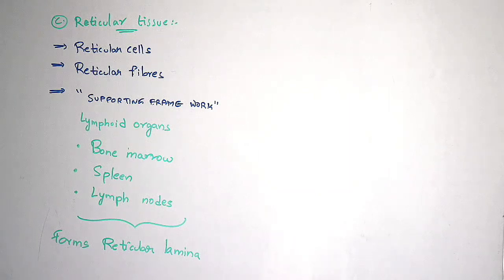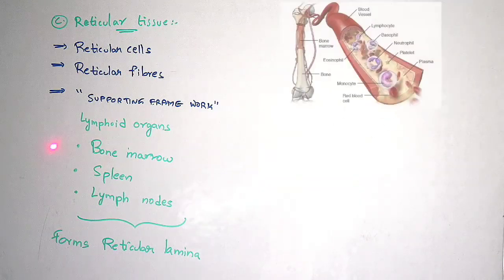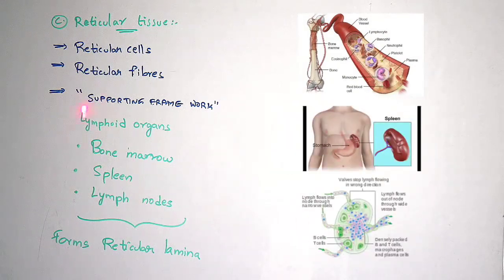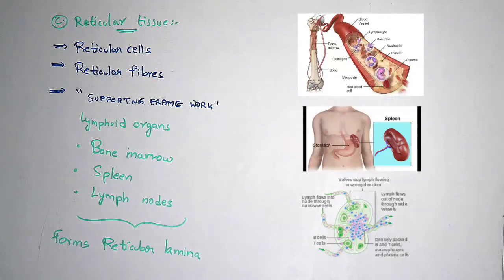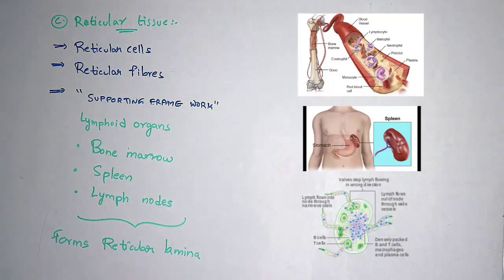Reticular tissue mainly forms the supporting framework for lymphoid organs. What are the lymphoid organs? Bone marrow, spleen, and lymph nodes. These all get together and mainly form a reticular lamina. Reticular lamina can be seen below the base membrane — for example, below the epidermis of human skin there is a base membrane, and within that base membrane you can see this reticular lamina.